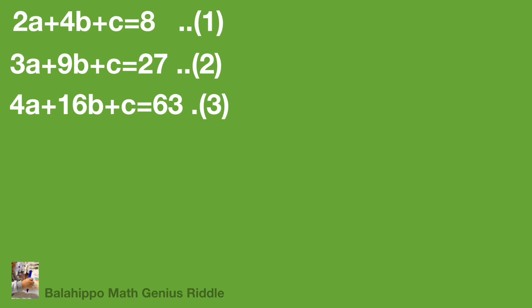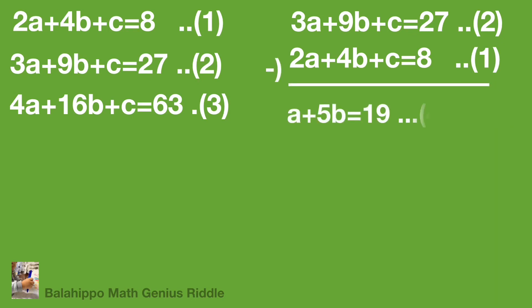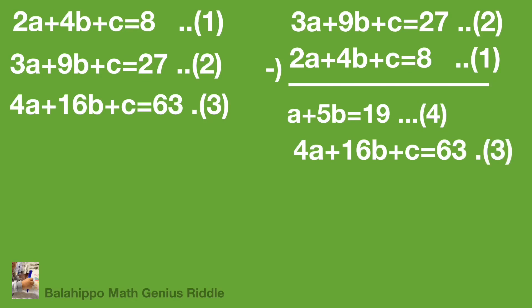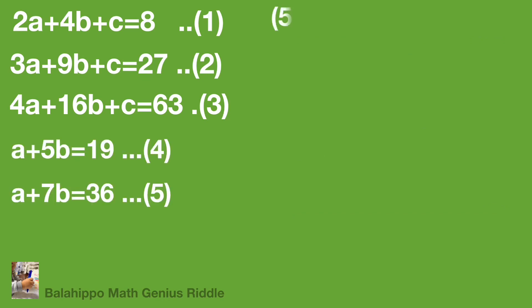First, subtract equation 1 from equation 2. We generate: a + 5b = 19, as equation 4. Then subtract equation 2 from equation 3. We generate: a + 7b = 36, as equation 5. Equation 5 minus equation 4 gives 2b = 17.